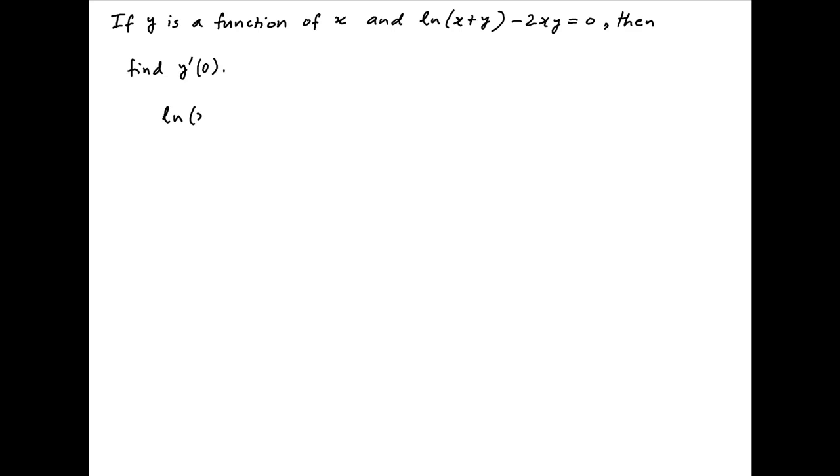We are given the equation ln(x+y) - 2xy = 0. Let's call this equation 1. Now if you put x = 0 in this equation, it becomes ln[y(0)] = 0.